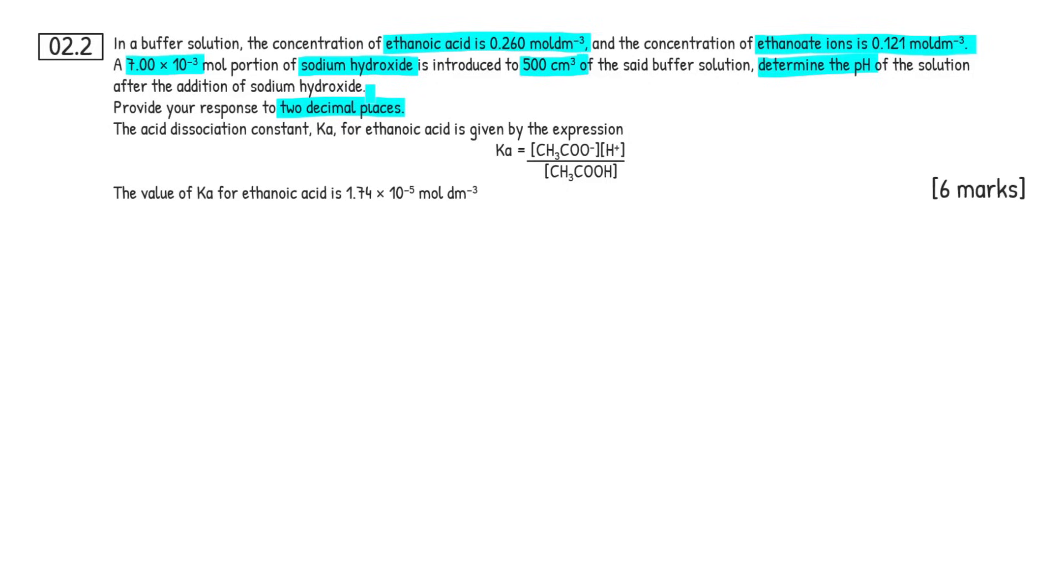We have to provide our answer to two decimal places. This is never going to change. At A-level chemistry, you always want to put your pH to two decimal places, just try and remember that. And I've added this information for the Ka expression and what the Ka value is from the previous question 2.1. It was quite an easy question, so I thought I'd keep it separate entirely.